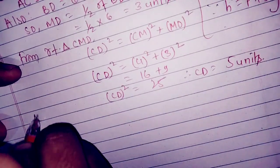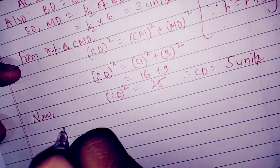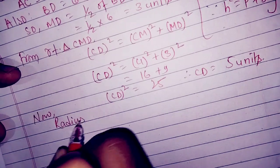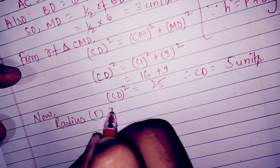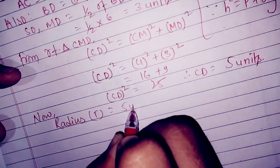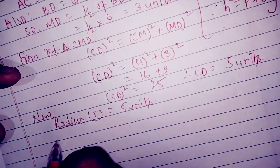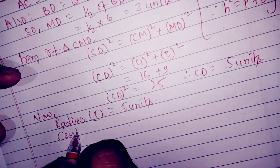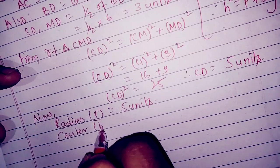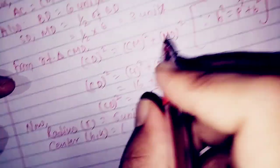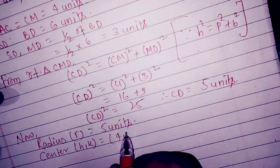So the radius R is equal to 5. We will take the center of the circle as C(h, k), where h equals 4 and k equals 5.